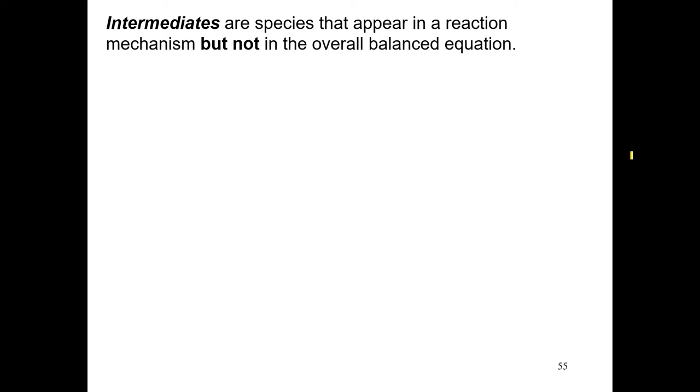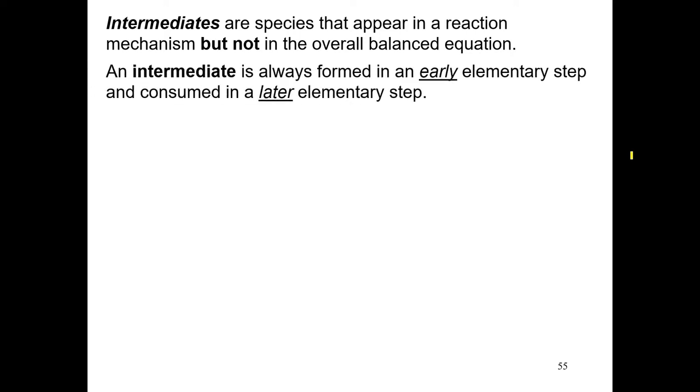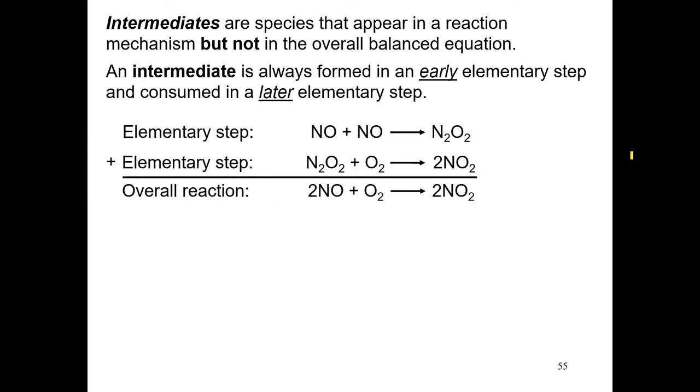And the way you distinguish them, the way you identify them, is because an intermediate is formed in an early elementary step and consumed in a later elementary step. So for example, when we built that mechanism for this reaction, we noticed that the N2O2 is produced in the first step, but then it's consumed in the second step. And as we add the two elementary steps, those two species essentially cancel out and no longer show up in the balanced equation.